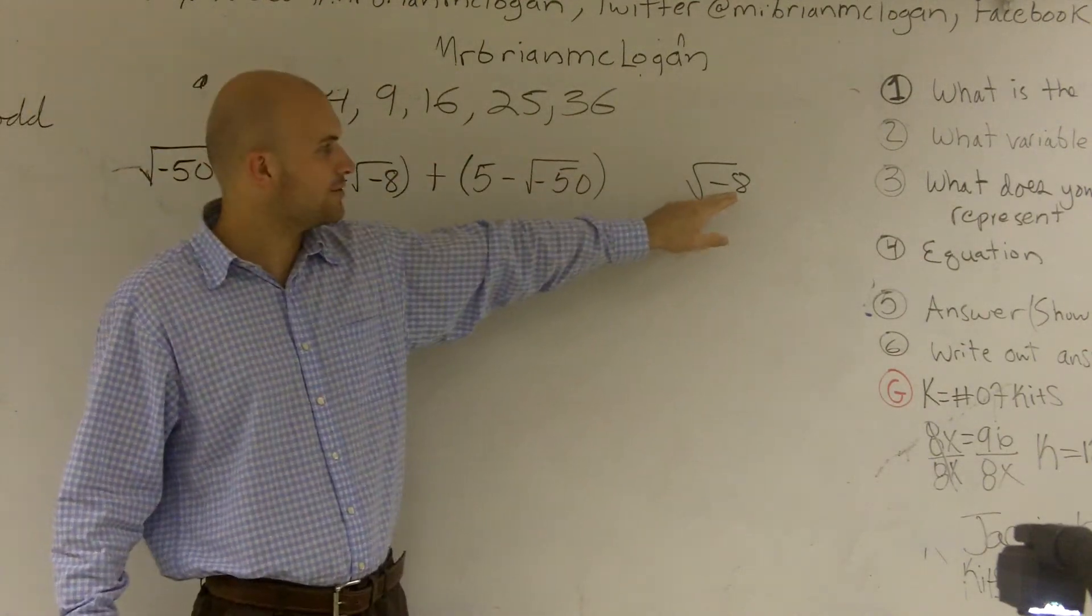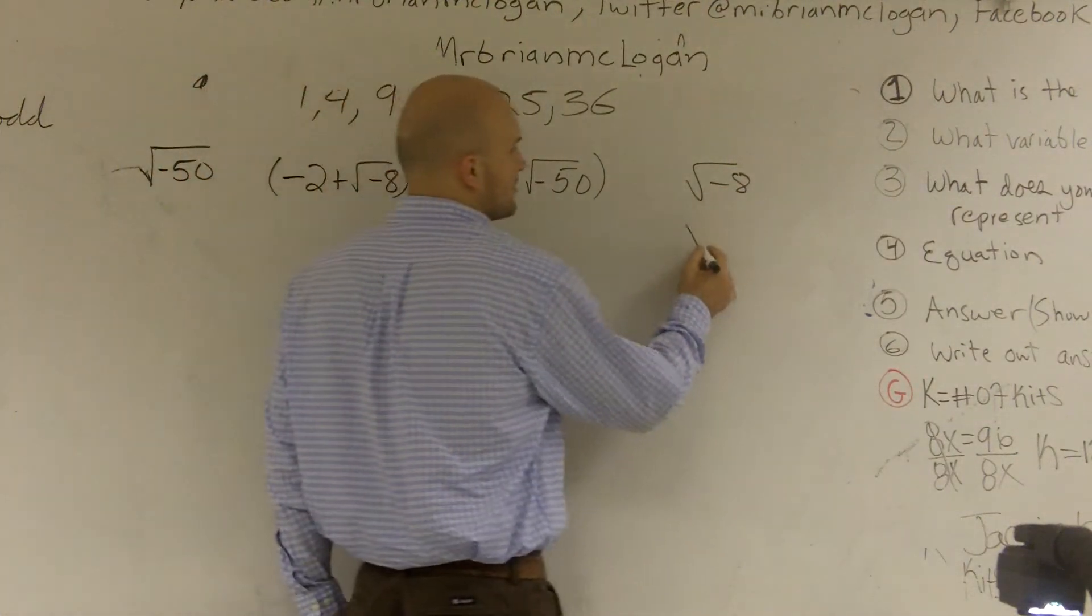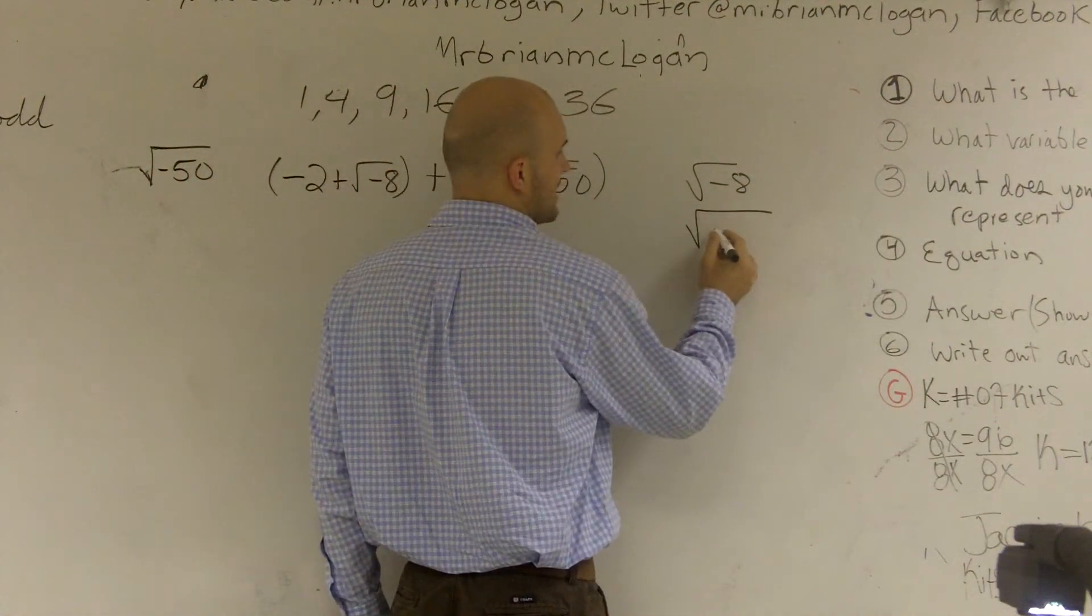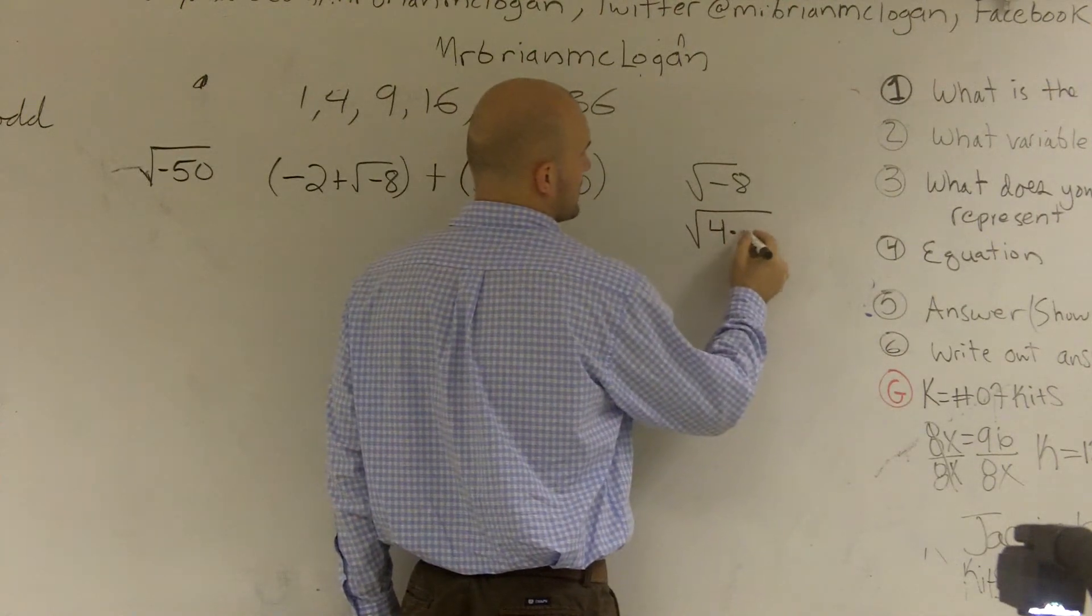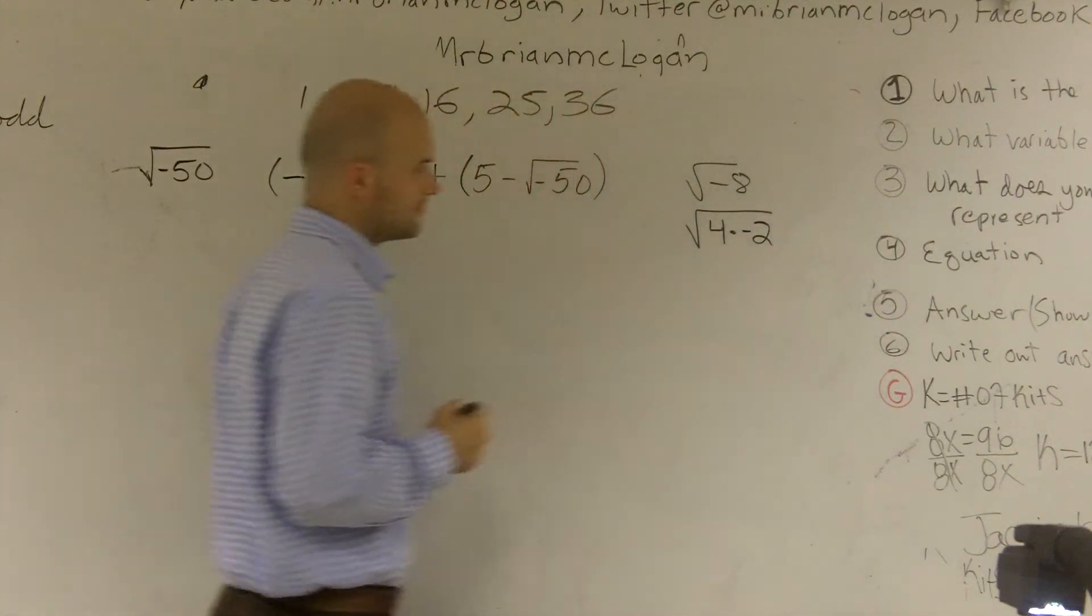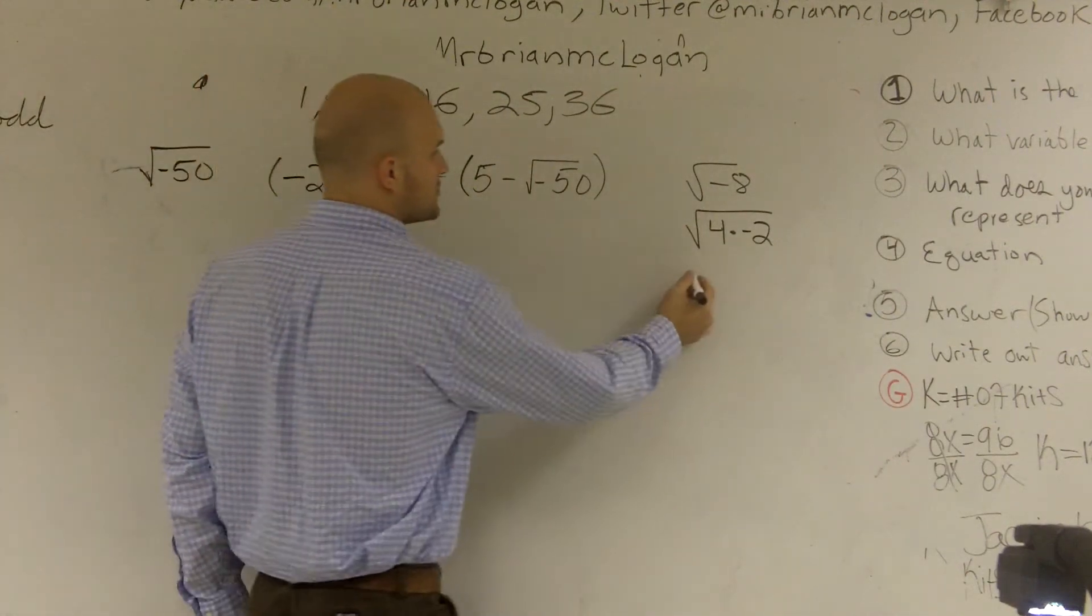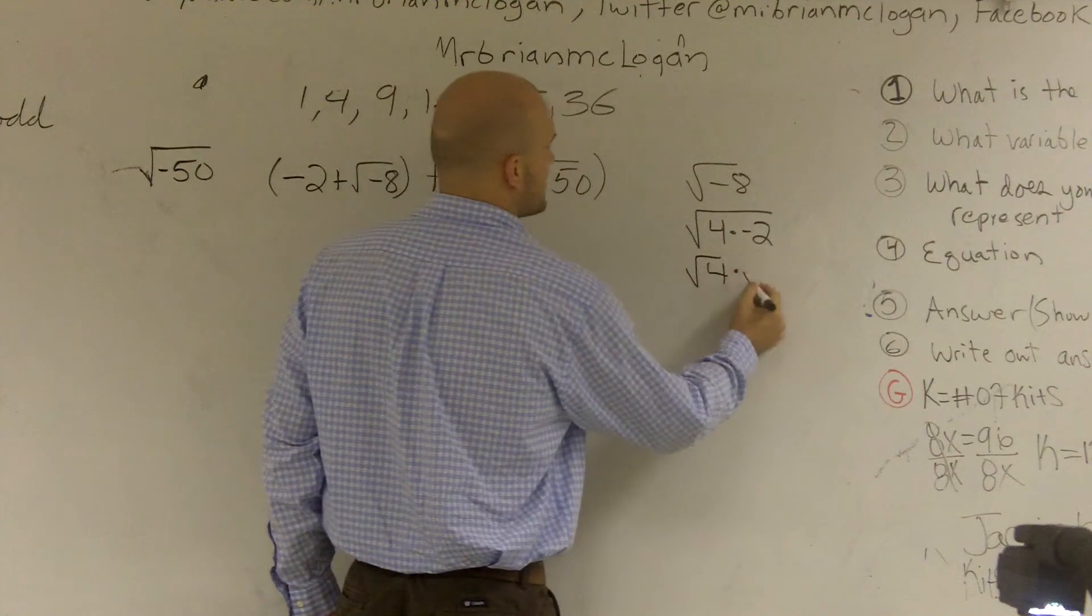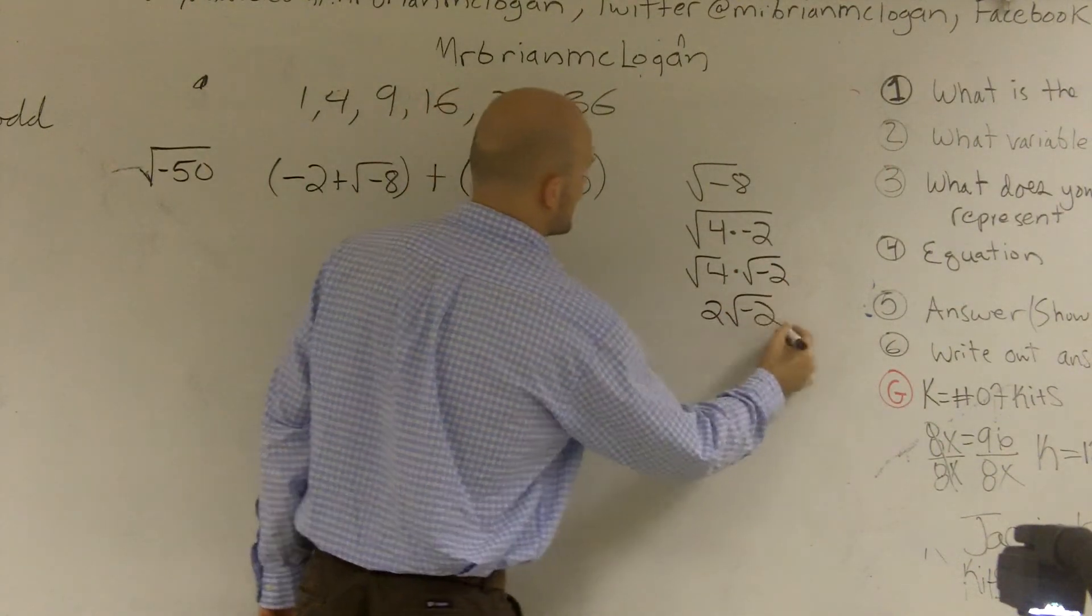Here, I know I can take the square root of 4 and it also goes into the square root of negative 8. So I'm going to rewrite this as 4 times negative 2. And now I can break this up into the square root of 4 times the square root of negative 2. The square root of 4 is 2.